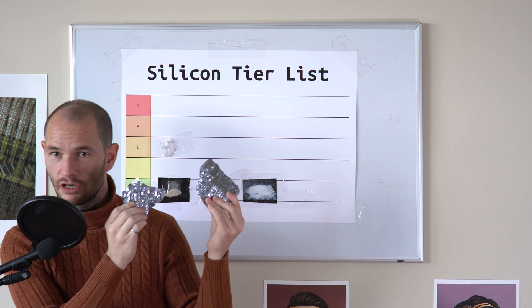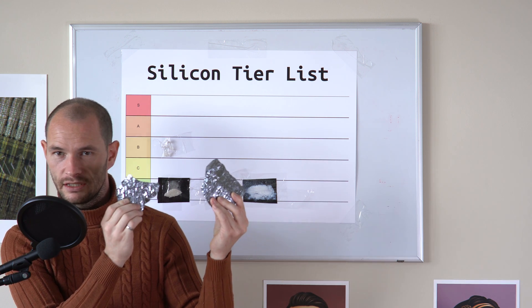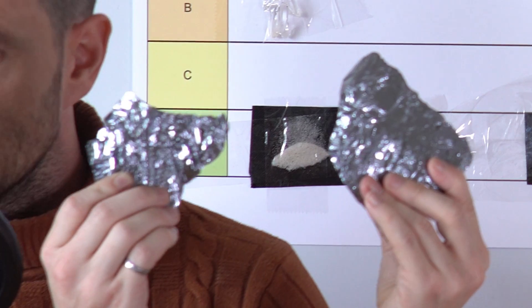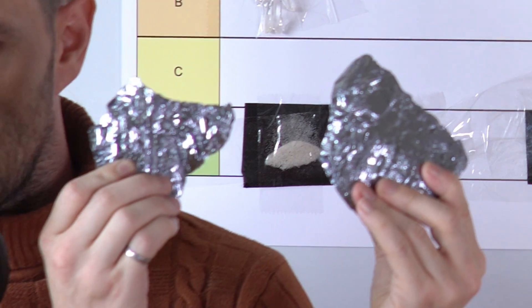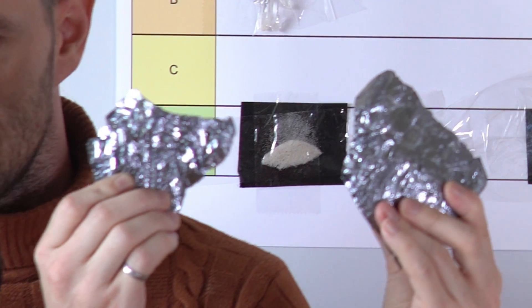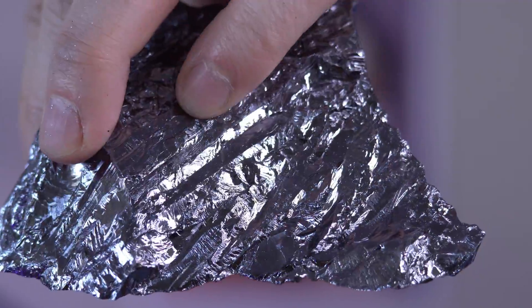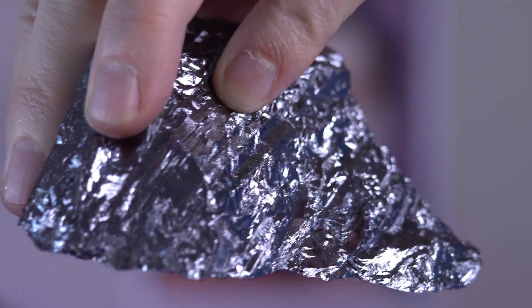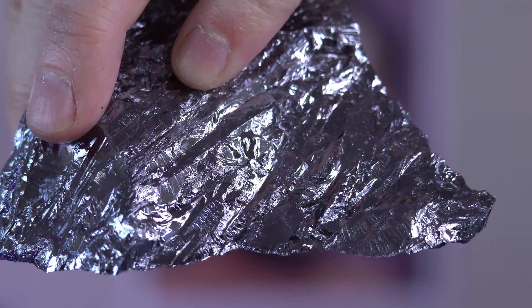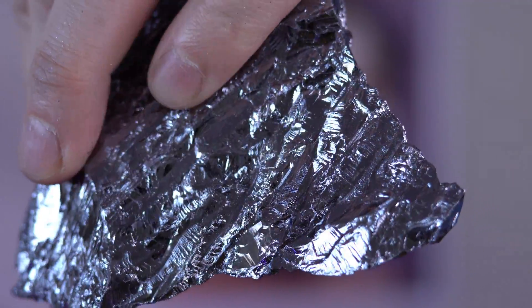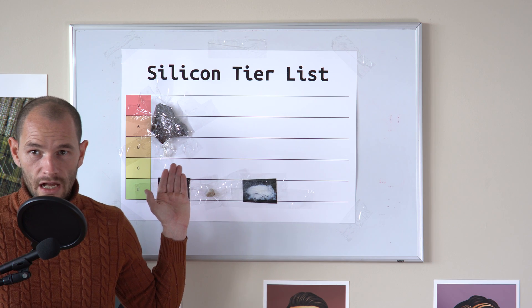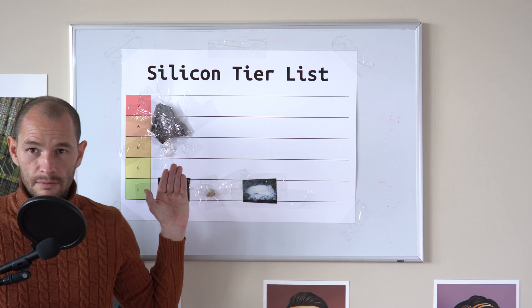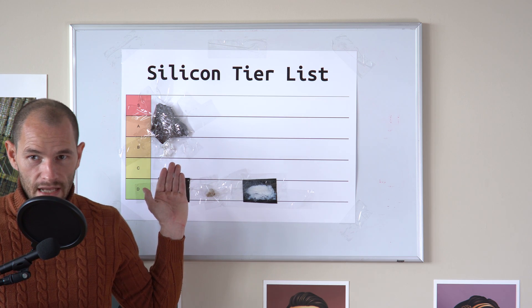Next is solid chunks of polysilicon. These are solid chunks of pure silicon with random grain orientations. This can be produced by heating silicon dioxide and carbon in an arc furnace. It also looks really cool. For this reason, I'll put concentrated polysilicon in the A tier.